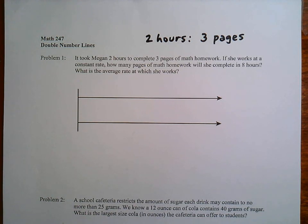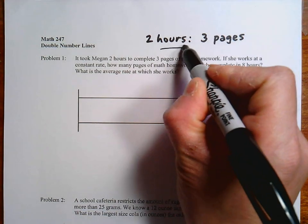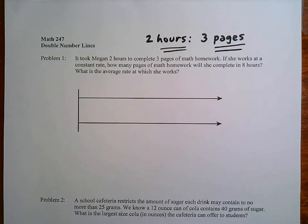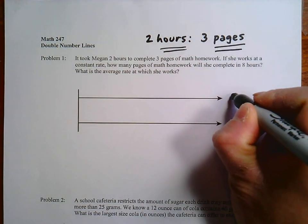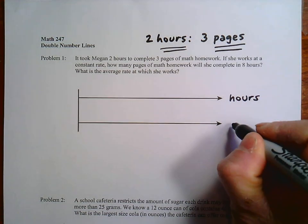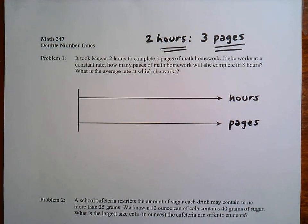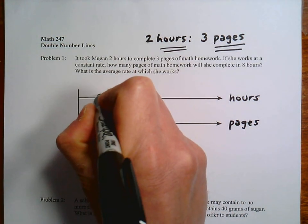And then they have the question about the average rate. So this is the way a double number line works is we're dealing with two quantities that have different units, the hours and the pages. So I'm going to do that here. So this is time in hours, and here we have the number of pages of homework.